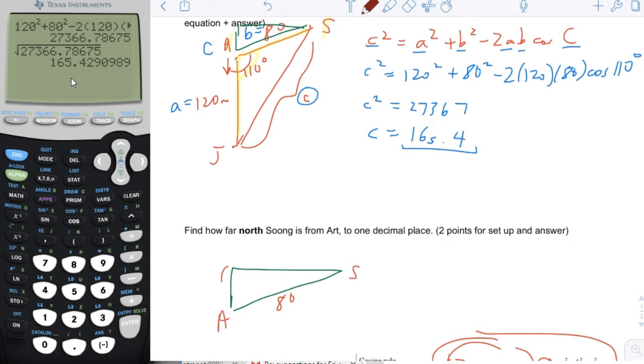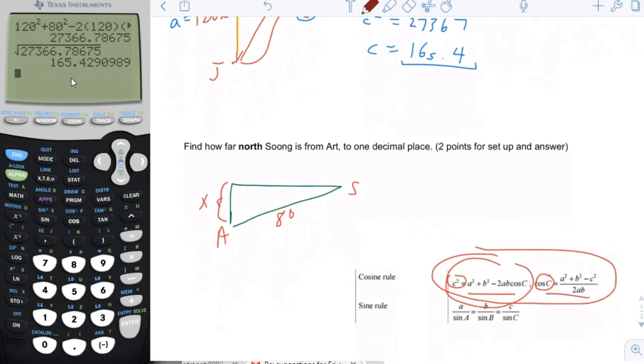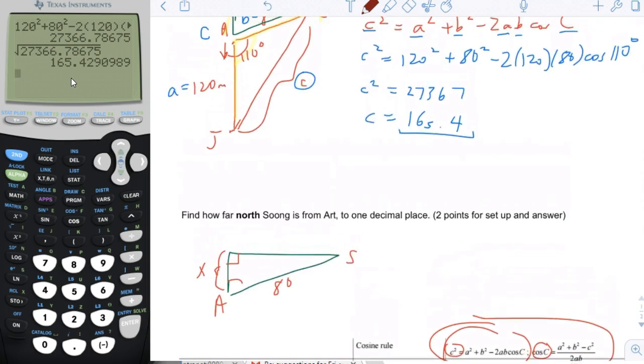We know that the distance is 80. But what they want to know is the north part of it. So basically what they want to know is this distance here. So this is actually just a simple sine cosine tangent problem, because this is a right triangle. So we know this angle actually.